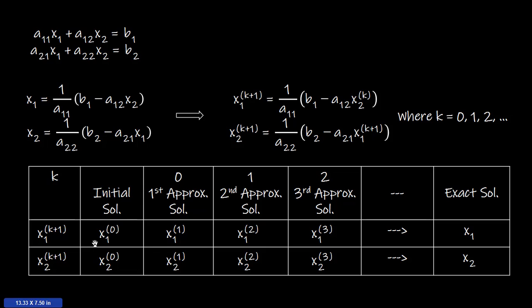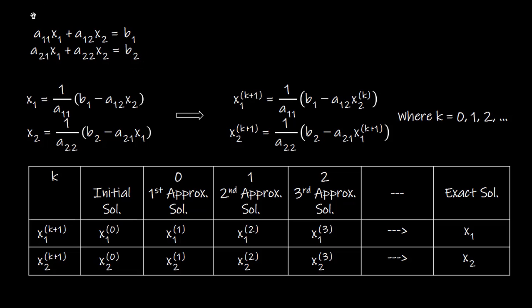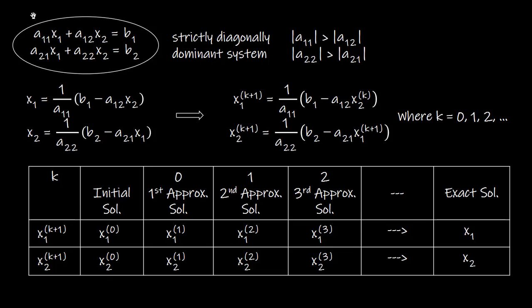We can then use the approximate solutions from the second iteration to perform the third iteration, and this process continues. As we take successive values of k, the sequence of approximate solutions gets closer and closer to the exact solution. If the given system of linear equations is strictly diagonally dominant, the sequence of approximate solutions will surely converge to the exact solution.